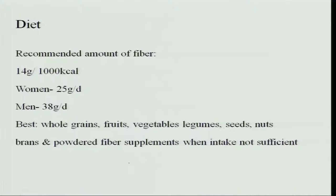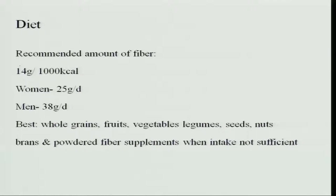Fiber is the most important nutrient to clear constipation. The recommended amount is 14 grams per 1000 kilocalories. Women require at least 25 grams per day and men 38 grams per day. Fiber can be obtained from whole grains, fruits and vegetables, seeds, nuts, and powdered fiber supplements. Constipation affects concentration and can cause nutrient loss and reduced intestinal absorption, leading to further deficiencies. Therefore, it is better to have good bowel evacuation every day.